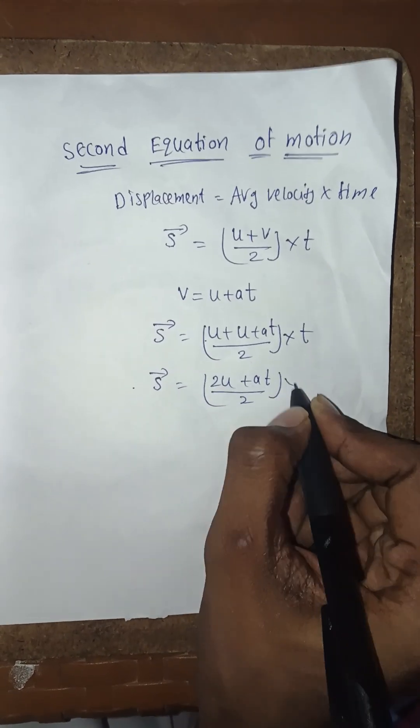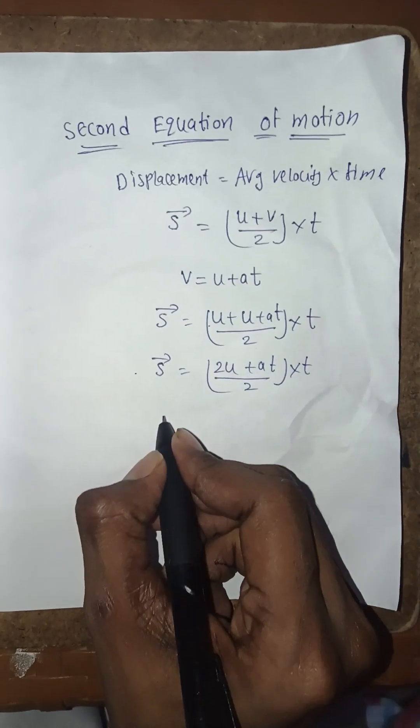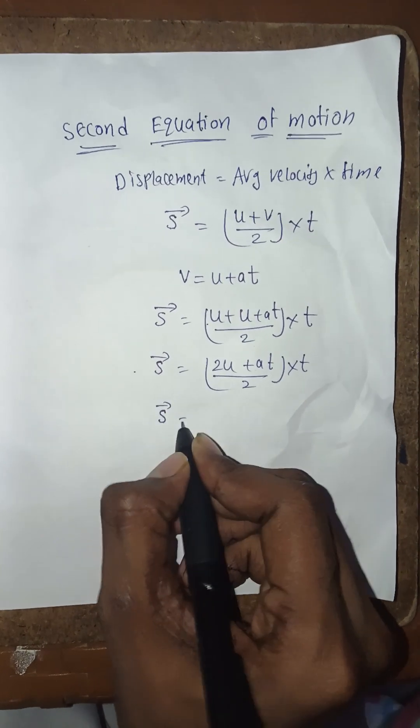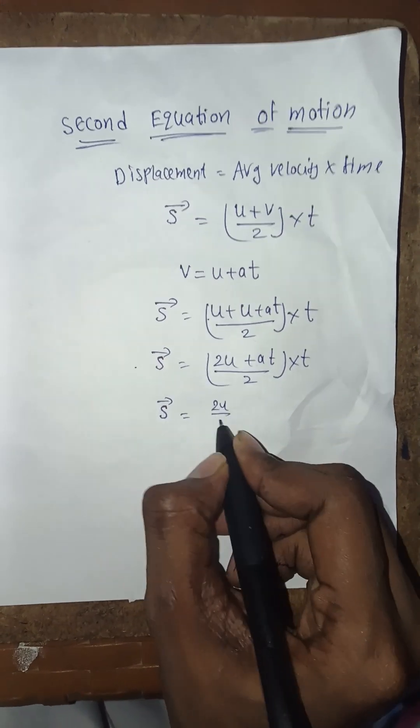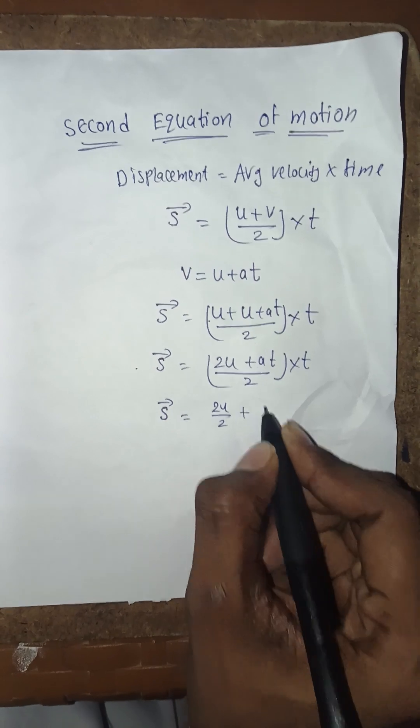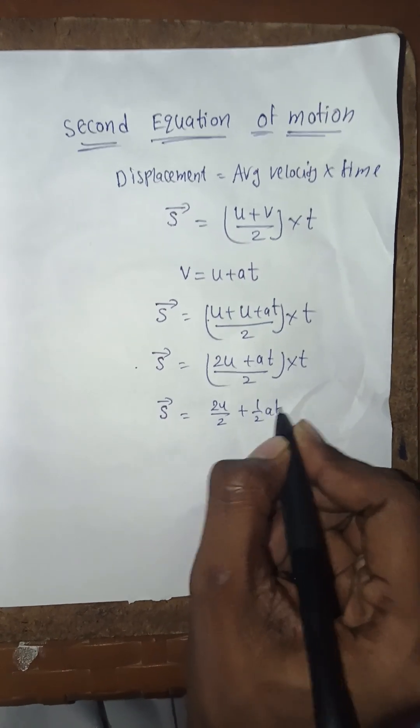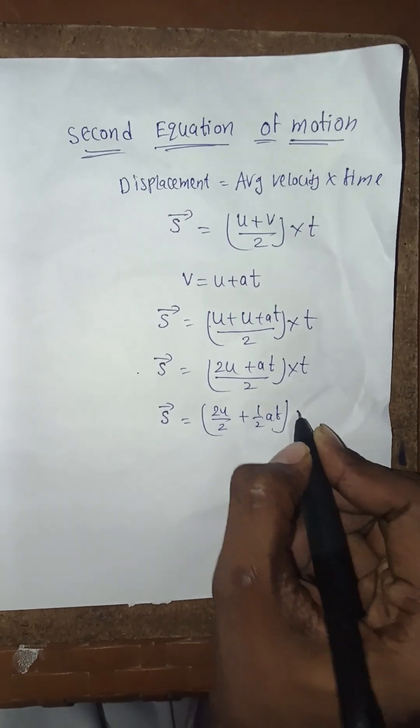Now we split this fraction. So s = 2u/2 + (1/2)at, all in brackets, times t.